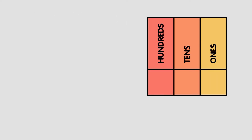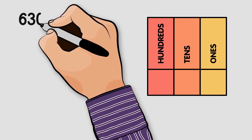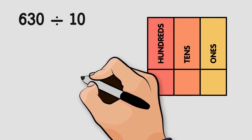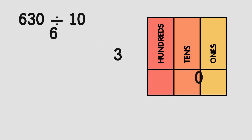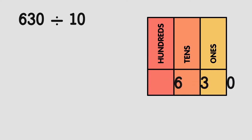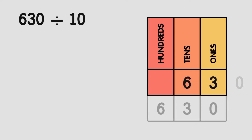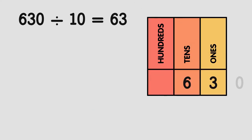Let's try 630 divided by 10. We are going to move everything one place value to the right: the six hundreds will become six tens, three tens will become three ones, and that last zero we can cross out. So 630 divided by 10 is equal to 63, or six tens and three ones.